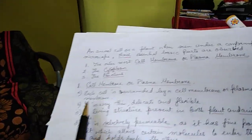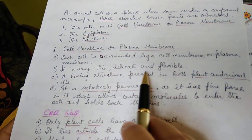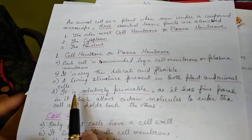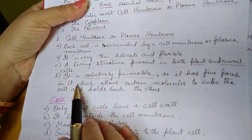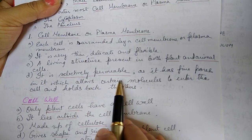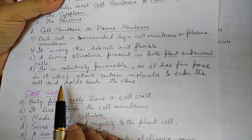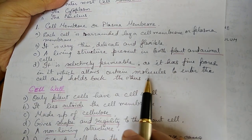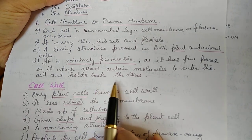Each cell is surrounded by a cell membrane or plasma membrane. It is thin, delicate and flexible. It's a living structure present in both the plant and animal cell. It is selectively permeable membrane, that is it has fine pores on it which allows certain molecules to enter the cell and holds back the others.